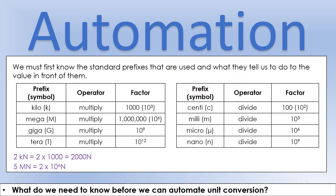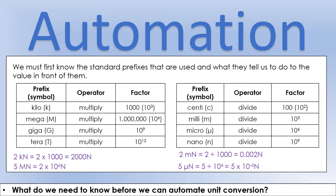For the prefixes that represent small things, the operator is different — instead of multiplying, we're now dividing. So if we had two millinewtons, a small 'm' means milli, and it's telling you to divide by 1000. If we have five micronewtons, the micro symbol tells you to divide by a million — written as 5 times 10 to the minus 6 in standard form. And if we had nano, we'd end up with 5 times 10 to the minus 9.